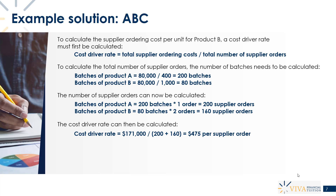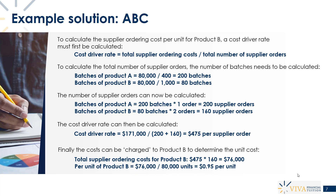This question focuses on product B. The easiest approach is to first work out the total supplier ordering costs we would charge to all product B production. We know we'll place 160 supplier orders to make all the product Bs, and at $475 per order, that gives us total supplier ordering costs allocated to product B of $76,000.